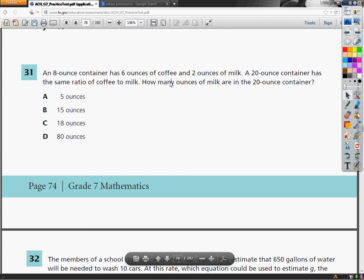Grade 7 TCAP practice test math section question number 31. This question is really annoying. It has extra numbers that you don't really need. An 8 ounce container has 6 ounces of coffee and 2 ounces of milk. A 20 ounce container has the same ratio of coffee to milk. How many ounces of milk are in the 20 ounce container?